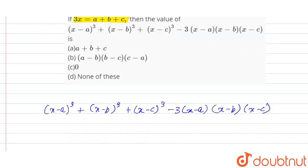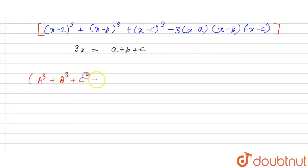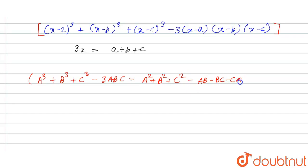We are given that 3x equals a plus b plus c. Looking at this expression, we use the identity: A³ + B³ + C³ minus 3ABC equals (A² + B² + C² minus AB minus BC minus CA) into (A + B + C).